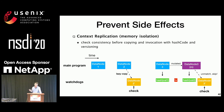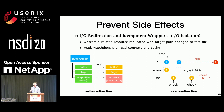Lazy replication brings one issue: the context might be different between the time the operation is invoked and the time the context is replicated. For this issue, we calculate a hash code for the context object and skip checking if the hash code does not match. We also address IO side effects using IO redirection and idempotent wrappers.